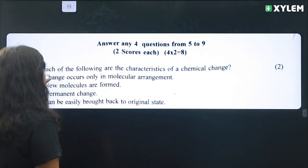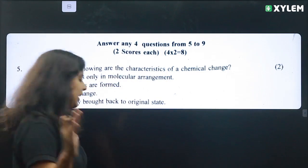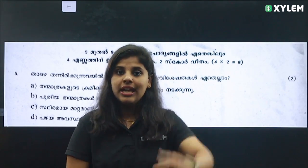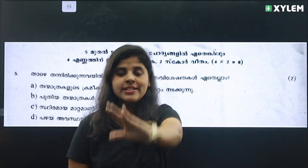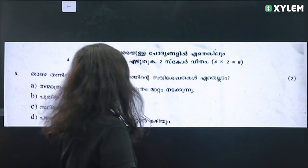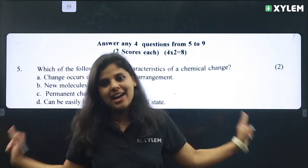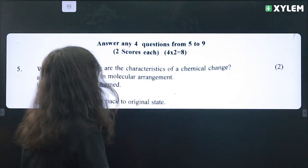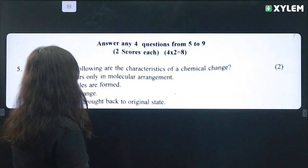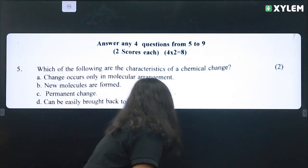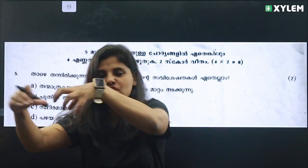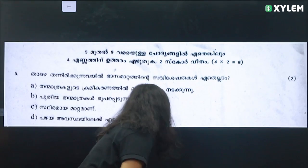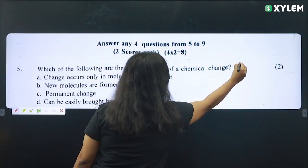Two marks question: Which of the following are the characteristics of a chemical change? In that chapter, we know about physical change and chemical change. These properties are very important. So chemical change — change occurs only in molecular arrangements. New molecules are formed if you have a chemical change. There are many different chemicals formed.